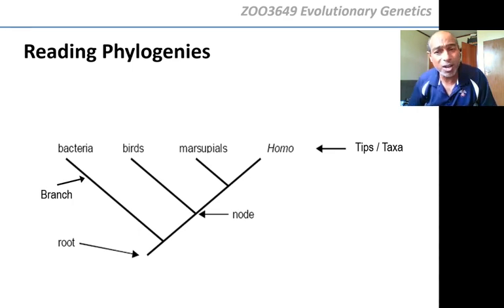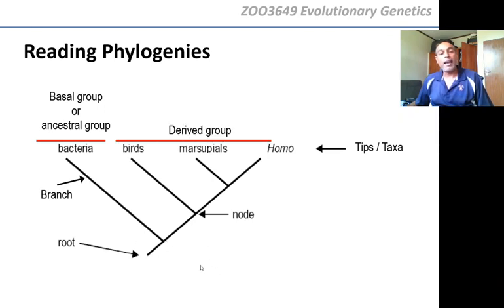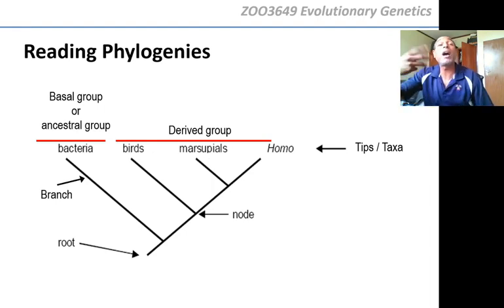They come together in a node, and then they come together at the root — at the trunk of the tree. All trees should have a root. The first branch from the root to break away is always called the basal or ancestral group — meaning the ancestor at that point in time would have looked like a bacterium. And then all the other groups since the ancestral group are called the derived group, because at that point onwards in the tree they all look different to bacteria — they've derived their own shape.